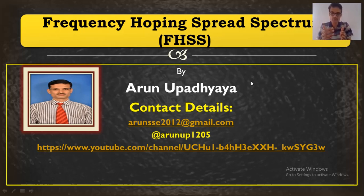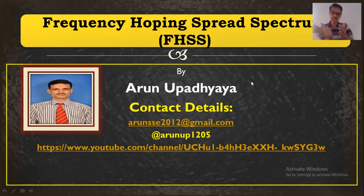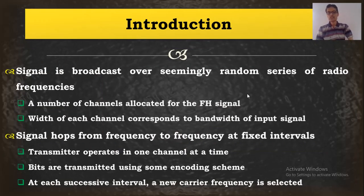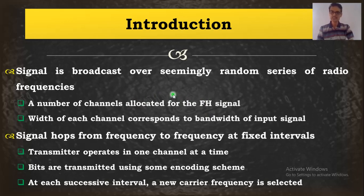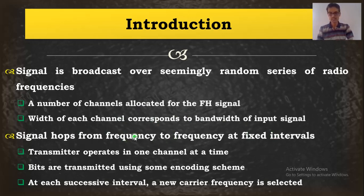Just as in double sideband suppressed carrier the bandwidth expands after multiplication, here when we multiply with so many carriers in the frequency spectrum it is expanded to those many frequencies. Now how it is done we will understand in this video. A large number of channels are allocated for the FH signal, meaning more and more frequencies are allocated. The signal is broadcast over a seemingly random series of radio frequencies. The width of each channel corresponds to the bandwidth of the input signal. The signal hops between a number of frequencies at different time instants.